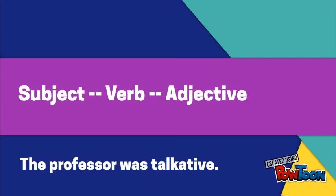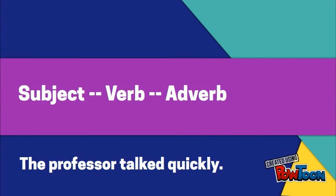Finally, subject, verb, adverb. For example, 'the professor talked quickly.' In this example, the professor is the subject and talked is the verb. Quickly is used to describe the verb talked, so it is an adverb. So these are the four basic sentence patterns in English.